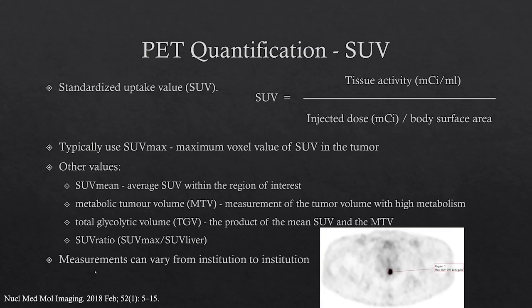Measurements can and do vary from institution to institution because the software and hardware used for acquiring PET scans are usually not standardized. Unless you have standardized your PET acquisition, you cannot compare values from one center to another. This also means that when you see an absolute cutoff SUV value in the literature, you probably won't be able to apply it to your center, unless the study was done at your center on the same camera.